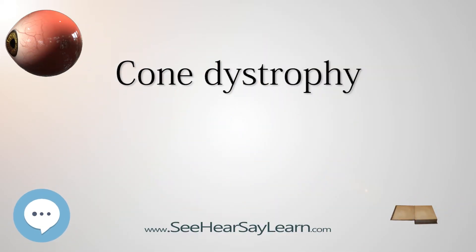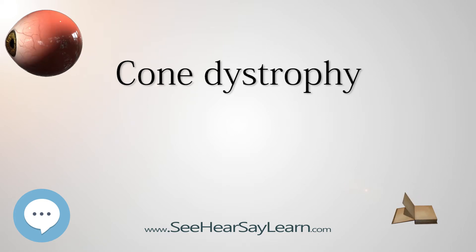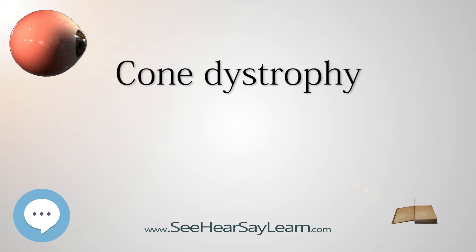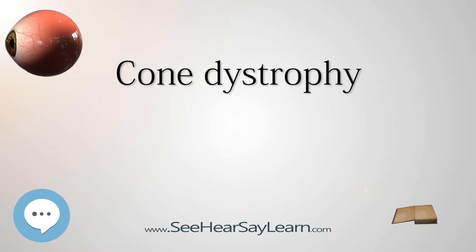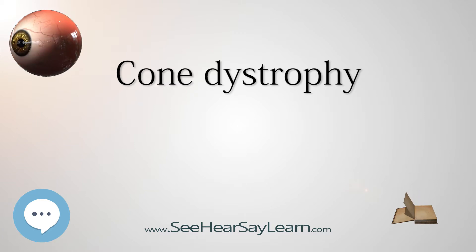A cone dystrophy is an inherited ocular disorder characterized by the loss of cone cells, the photoreceptors responsible for both central and color vision. The most common symptoms of cone dystrophy are vision loss, age of onset ranging from the late teens to the 60s, sensitivity to bright lights, and poor color vision.